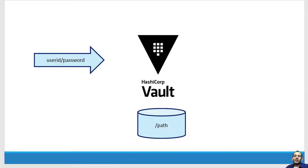Let us understand how secrets will be maintained within Vault and how Vault is going to store those secrets within any storage engine. There are N number of storage engines available and we are going to use the in-memory storage engine by default, provided by the development server in the beginning. Later we will see how to configure different storage engines. Let's keep this very simple to understand various features of Vault.